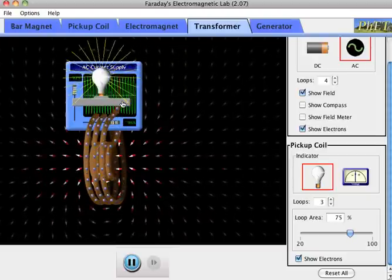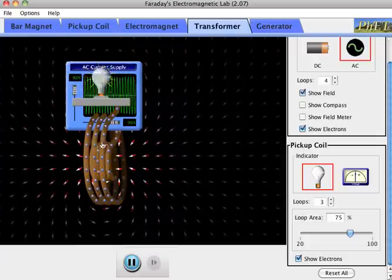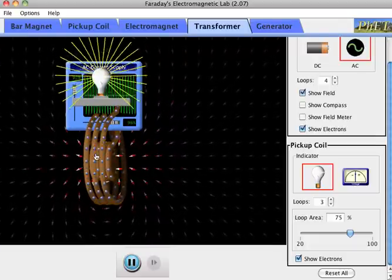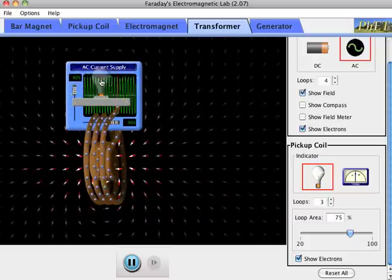The magnetic field changing back and forth in the other loop is causing the flux change in this big loop, and the flux change in this big loop is causing current to go back and forth, and that's lighting the light.